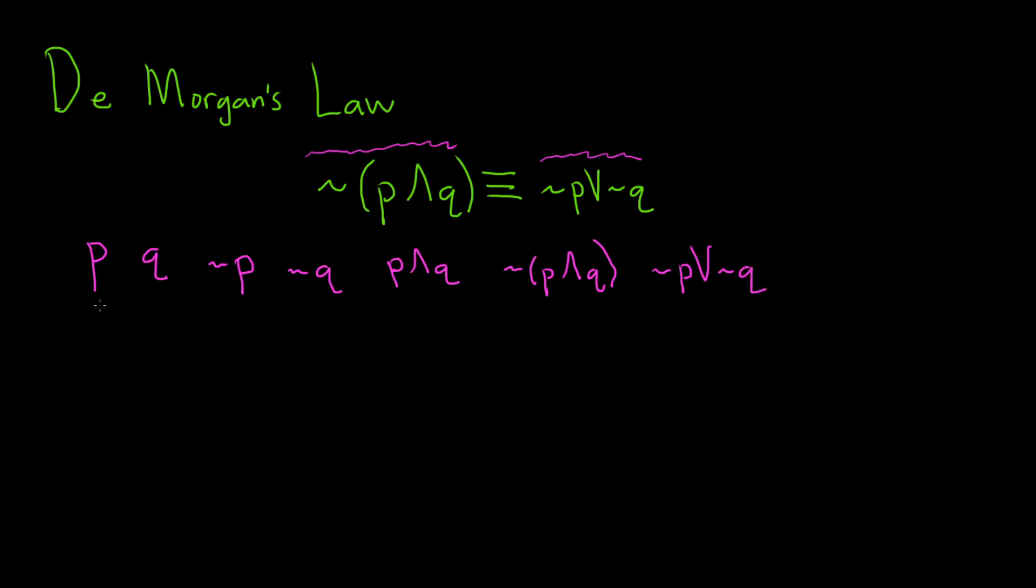Okay, let's start by listing the possible truth values. So one simple case is where p and q are both true. Another case would be if p is true and q is false. Another case is if p is false and q is true. And the very last case is if they're both false. And let's just work vertically, let's just work on each one and go vertically.